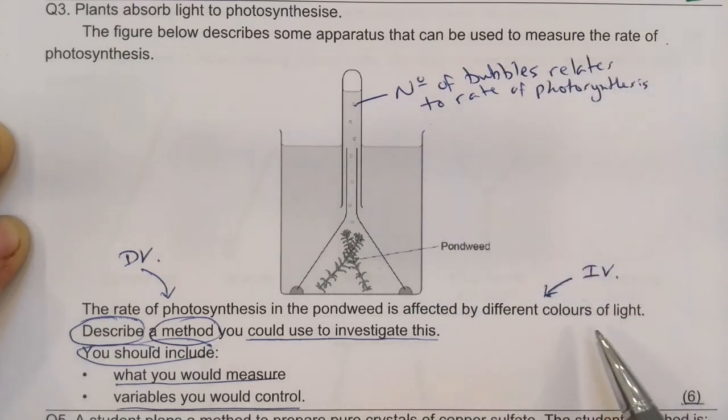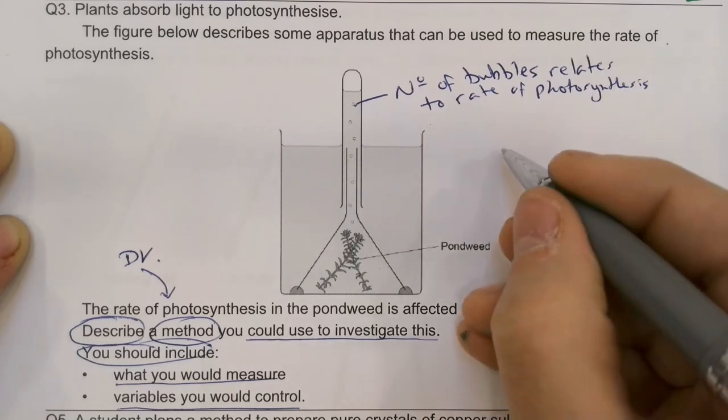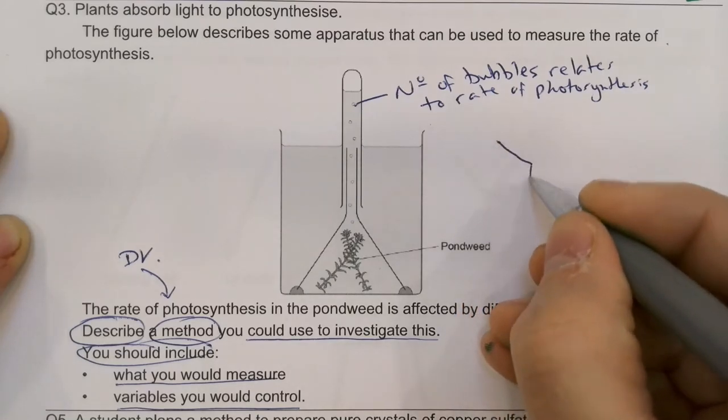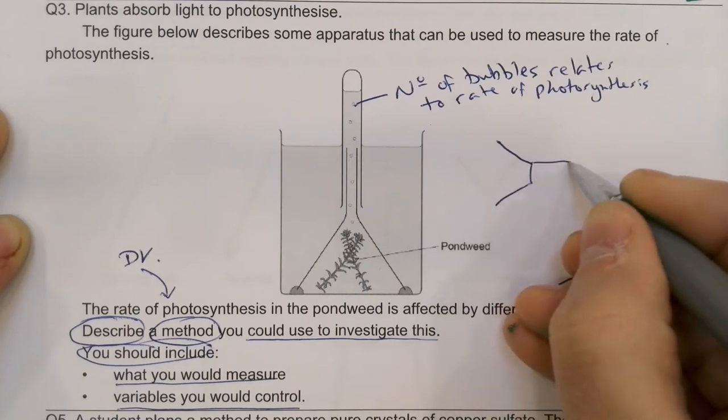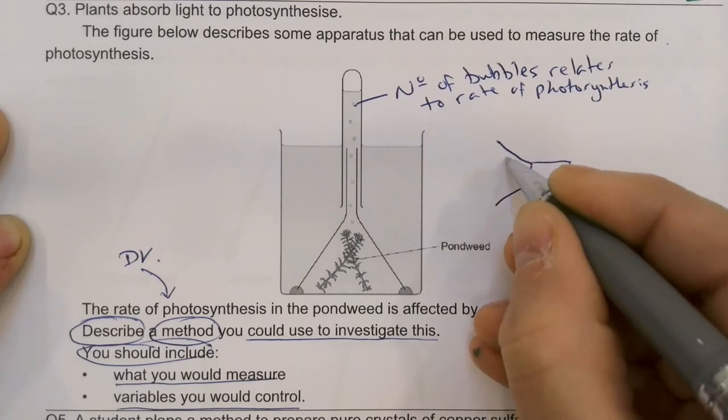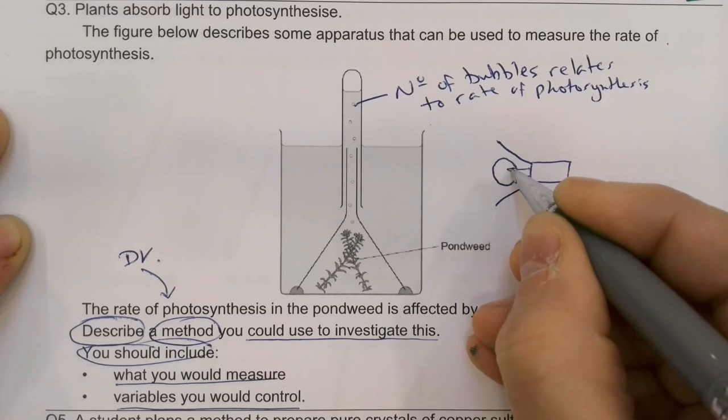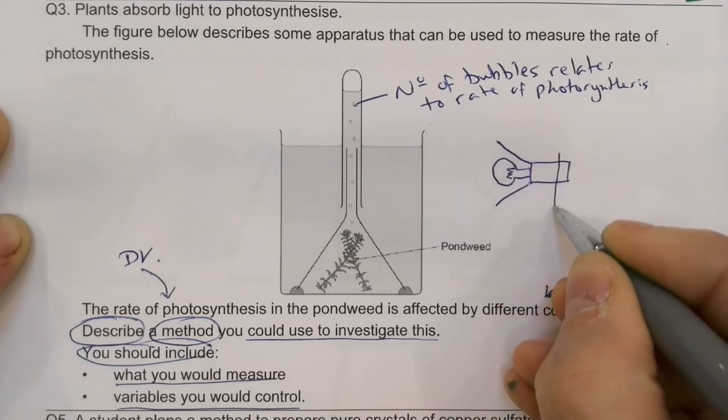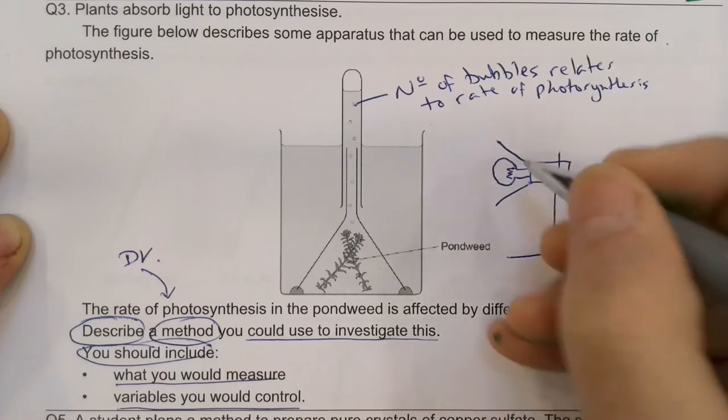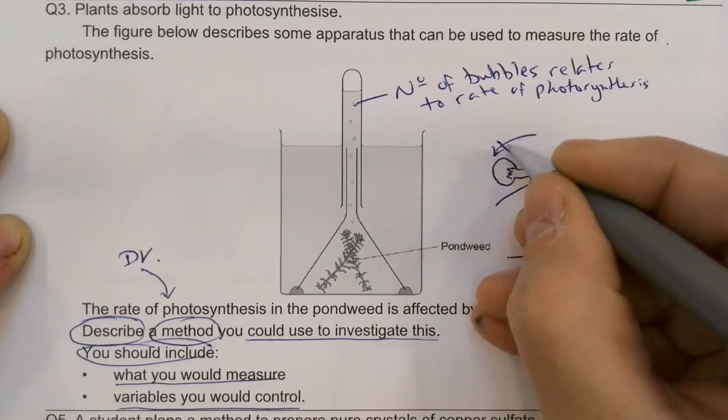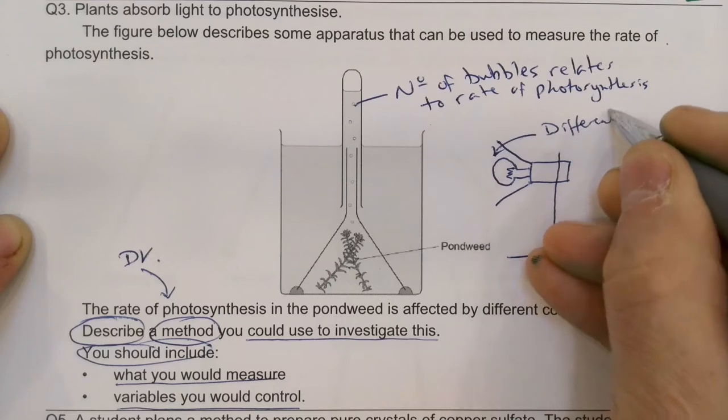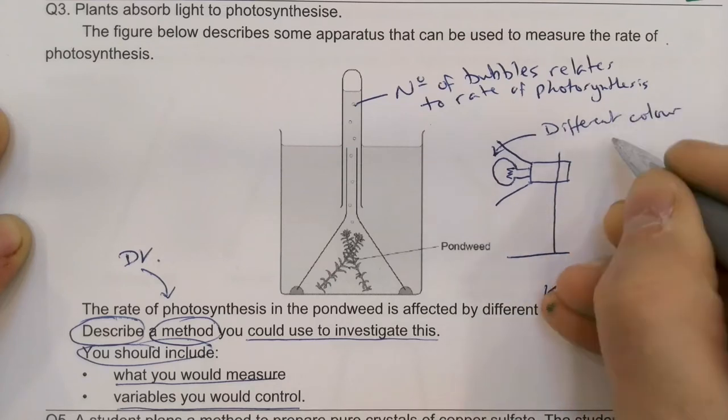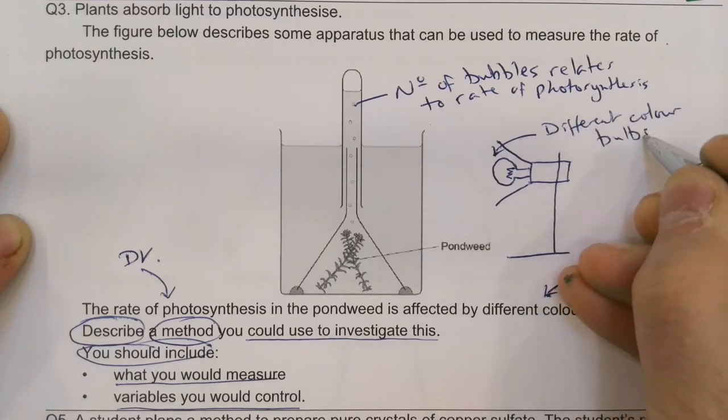What things, how am I going to change the different colors of light? Well, the easiest way is just to have, here's an awful drawing, but I'm just going to do - it's supposed to be a light bulb. There we go. What am I going to use? I'm going to use different color bulbs.